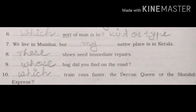Number 5: Blank well in blank compound goes dry in summer. Answer: This well in my compound goes dry in summer. Number 6: Blank sort of man is he? Answer is 'which'. Number 7: We live in Mumbai but blank native place is in Kerala. Answer is 'my'. Number 8: Blank shoes need immediate repairs. Answer is 'this'. Number 9: Blank bag did you find on the road? Answer is 'whose'.